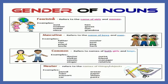First is feminine gender. Feminine refers to the name of girls and women. For example: aunt, mother, maid, niece, hen, goose, nun, grandma.